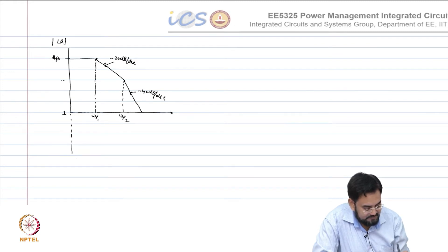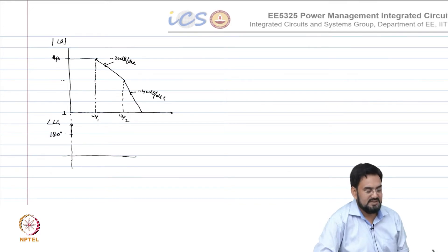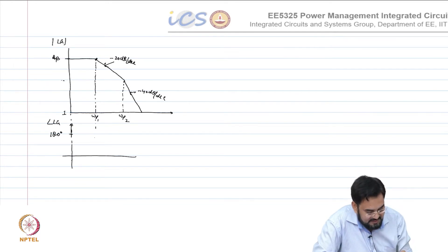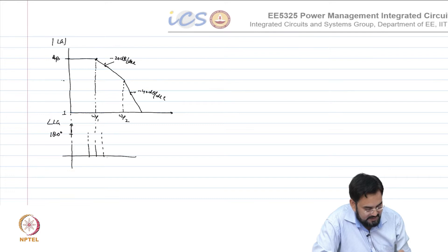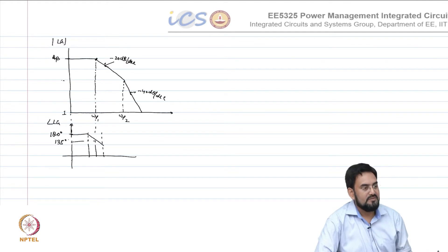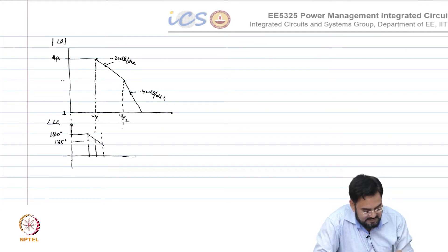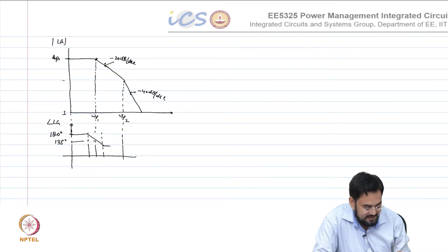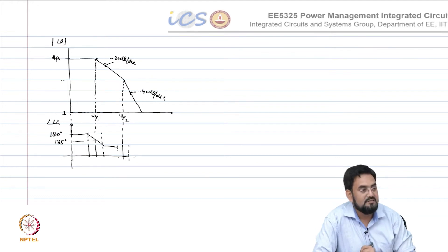Now do the phase plot. Again, starting from 180 degrees — it is a negative feedback. So what will be the phase here? If this is 10 times lower and 10 times higher, your phase will start dropping from here. This will be 135 degrees. And let us say the poles are more than one decade apart, so it will remain at 90 degrees, and then the effect of the second pole will start coming one decade before ωp2.